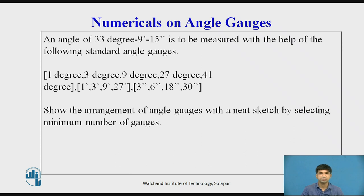So this is the problem given. So I want to form 33 degree. Is there the 33 degree angle gauge present? No. So how it can be formed? Addition and subtraction concept of angle gauges I can use. So here I will form 27 degree plus 9 degree. So 27 plus 9 will form 36 degree.